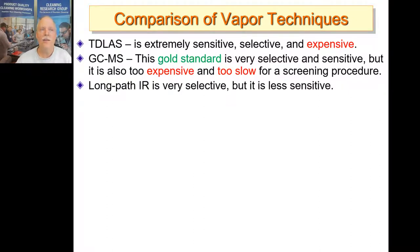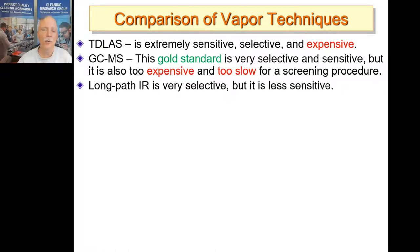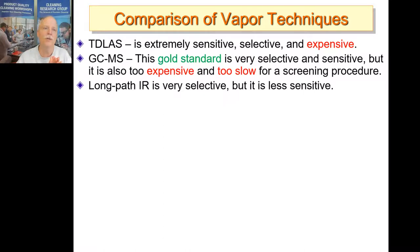Long path IR is very selective but also less sensitive. You take an infrared beam and bounce it between two mirrors for a very long path — some have 90 to 100 reflections, achieving path lengths of around 10 meters — but it's still pretty slow and not very sensitive.